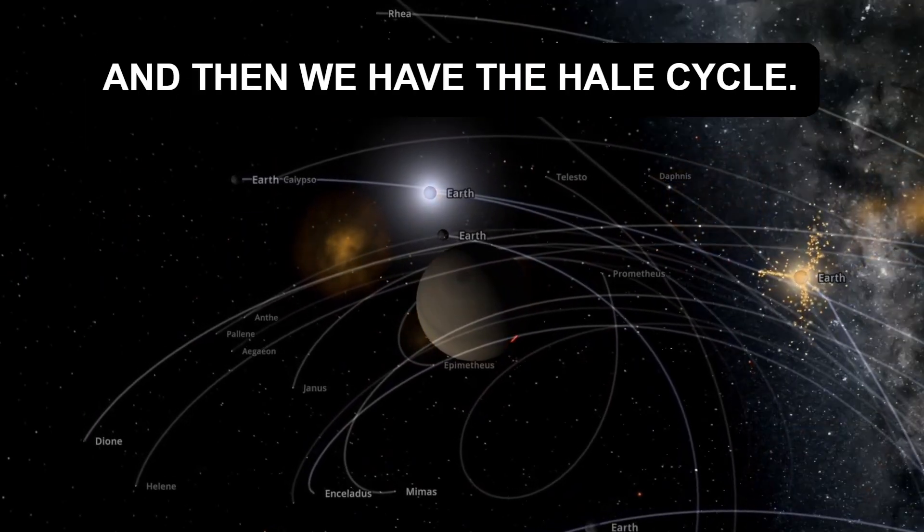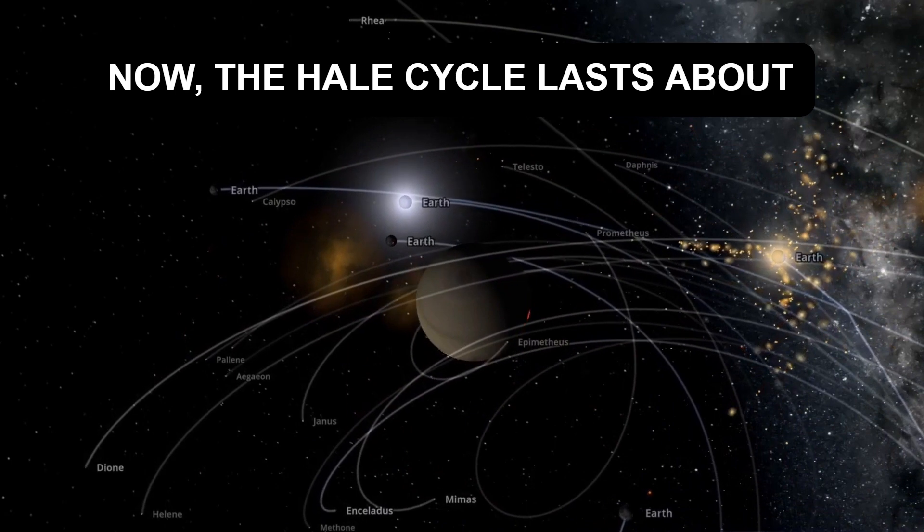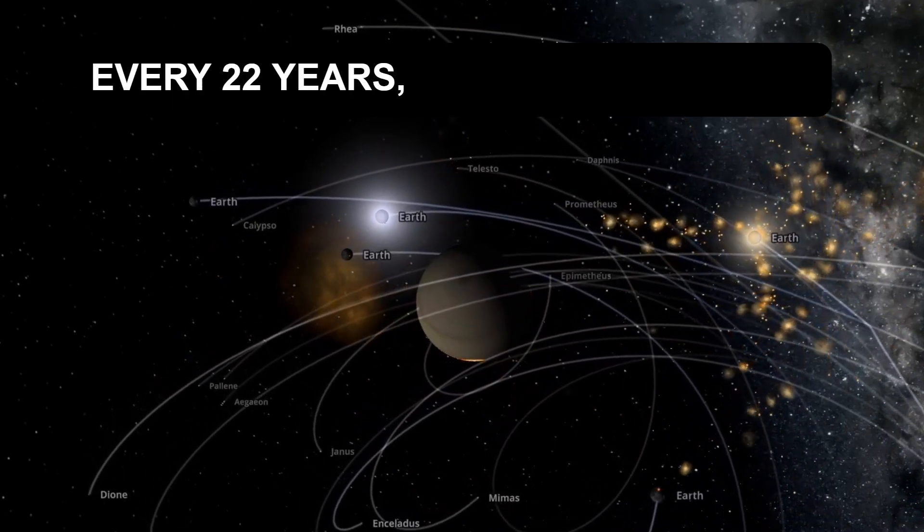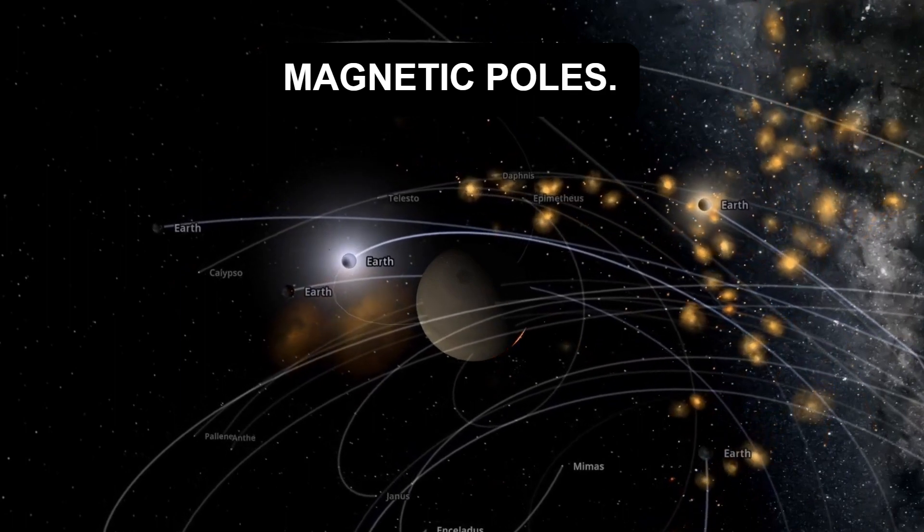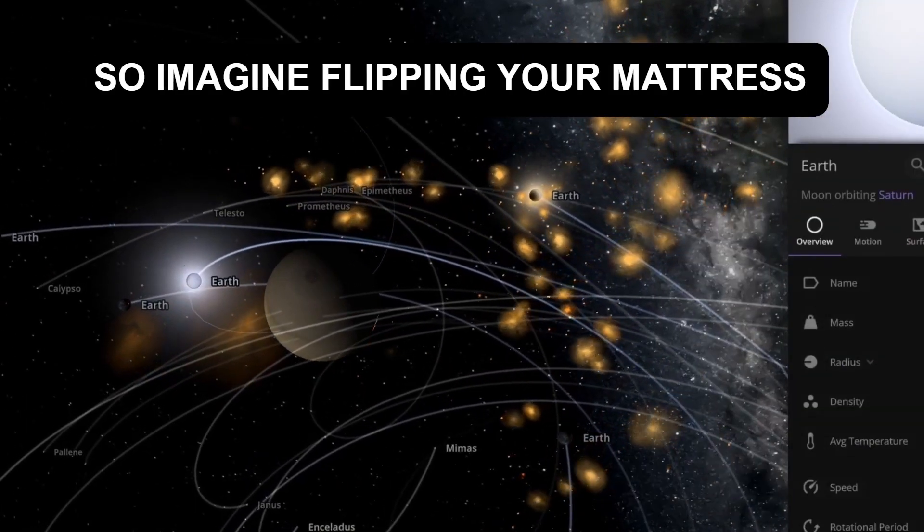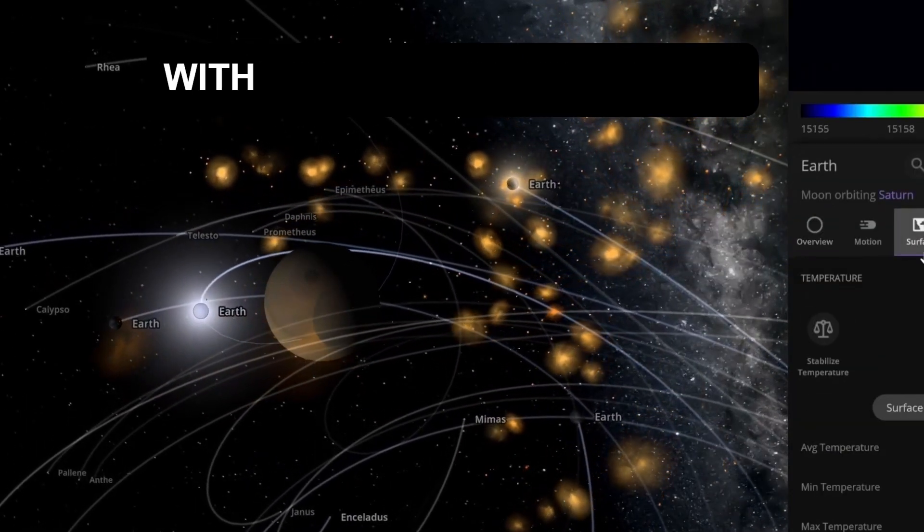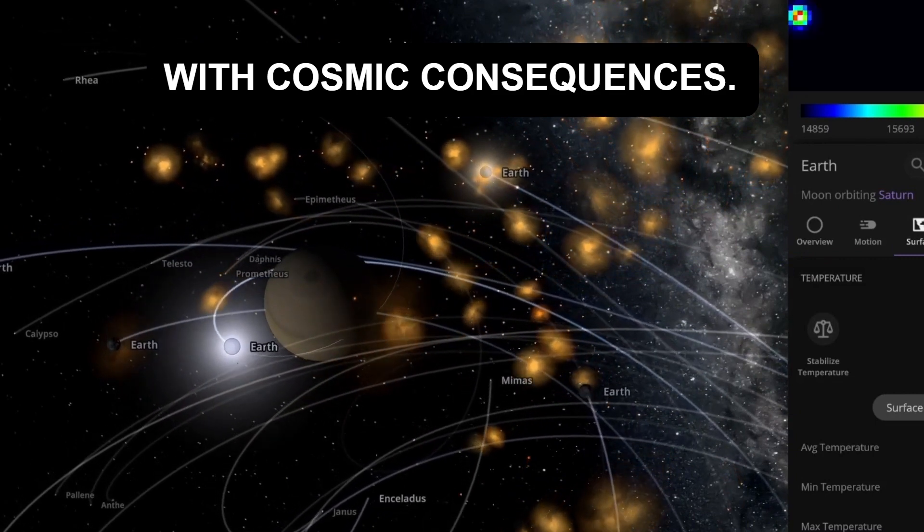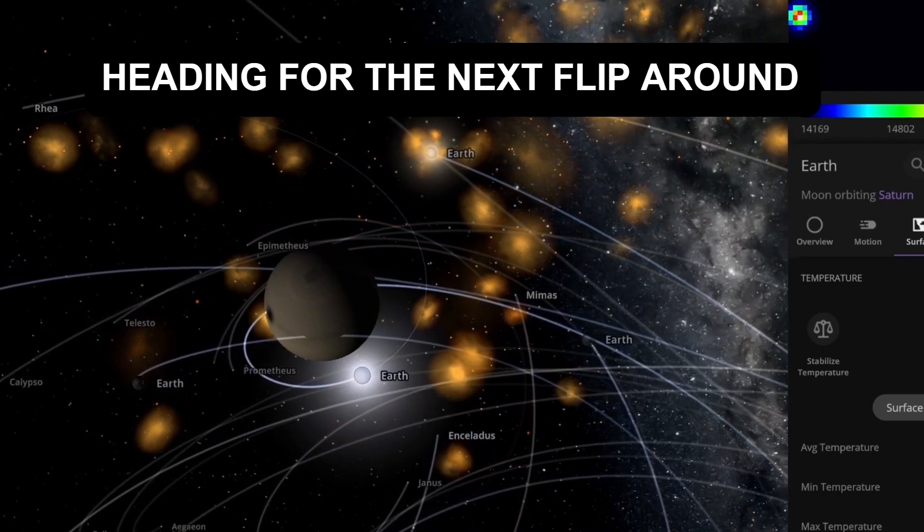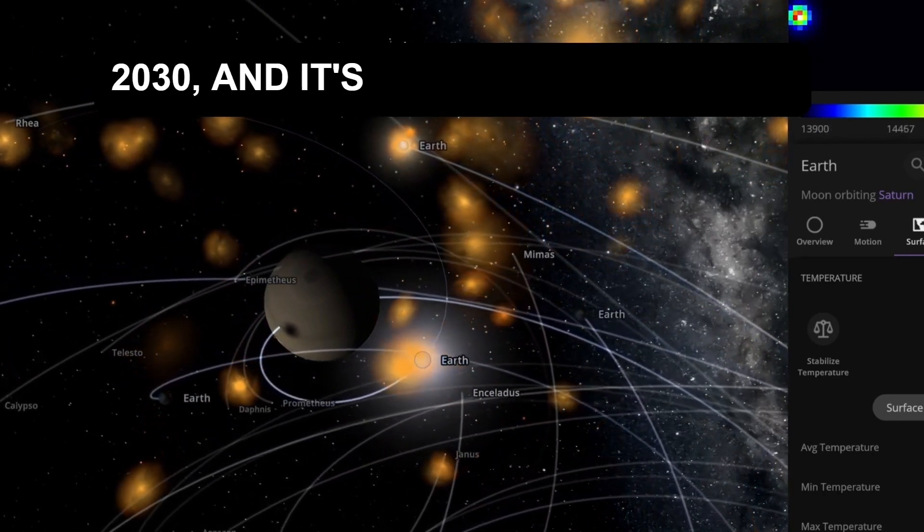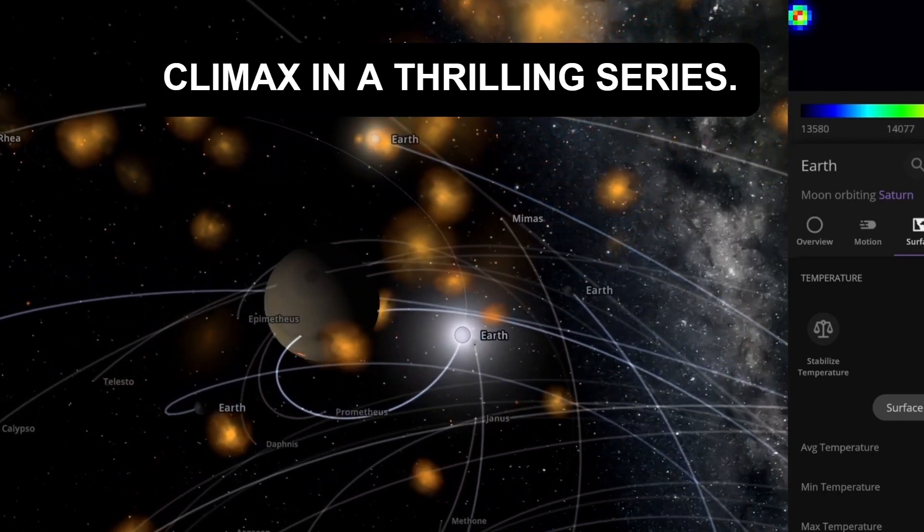And then we have the Hale cycle. The Hale cycle lasts about every 22 years, and every 22 years or so, the sun will flip its magnetic poles. So imagine flipping your mattress for a better night's sleep, but with cosmic consequences. Right now, we are mid-cycle. We're heading for the next flip around 2030. It's like waiting for the climax in a thrilling series.